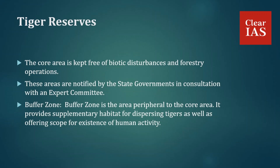The buffer zone is an area peripheral to the core area. It provides a supplementary habitat for dispersing tigers as well as offering scope for human activity. The limits of buffer zones are determined in consultation with the concerned Gram Sabha and an expert committee. Modifications to the boundaries of a tiger reserve can only be done on the recommendation of the National Tiger Conservation Authority and must be approved by the National Board of Wildlife.